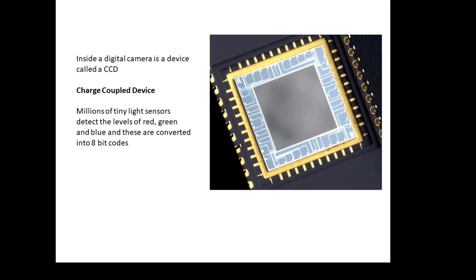Inside a digital camera, there's a thing called a CCD, which is a charge-coupled device. Instead of film in an old-fashioned camera, light now falls onto a CCD. There are millions of tiny light sensors—some detect red, some detect green, some detect blue. The levels of each color are encoded into 8-bit codes.